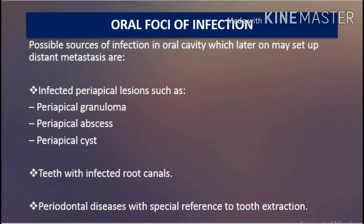Oral foci of infection — possible sources in the oral cavity which may later set up distant metastasis are: infected periapical lesions such as periapical granuloma, periapical abscess, and periapical cyst; teeth with infected root canals; and periodontal diseases, with special reference to tooth extraction.